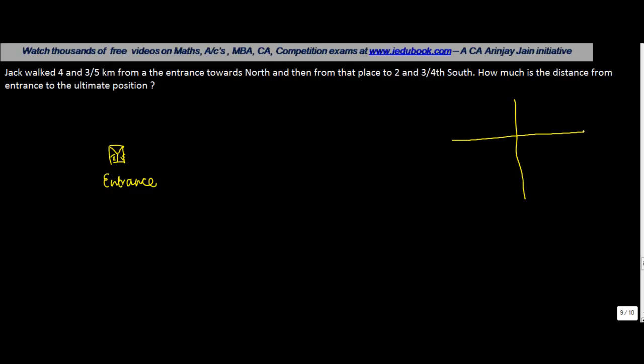Now this is the direction chart which is there, so you have north, you have south, you have east and you have west. So from the entrance, John walked towards the north.